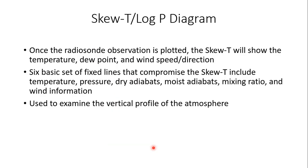When we talk about a weather balloon, we have to talk about the radiosonde — that transmitter which sends atmospheric data back down to the Earth's surface. Once that data is plotted, the Skew-T will show temperature, dew point, as well as wind speed and direction in the vertical. There are six basic sets of fixed lines that comprise this Skew-T, including temperature, pressure, dry adiabats, moist adiabats, mixing ratio, and wind information.